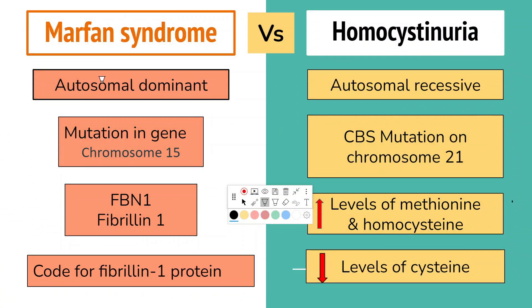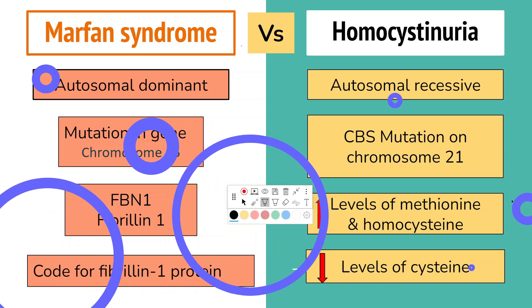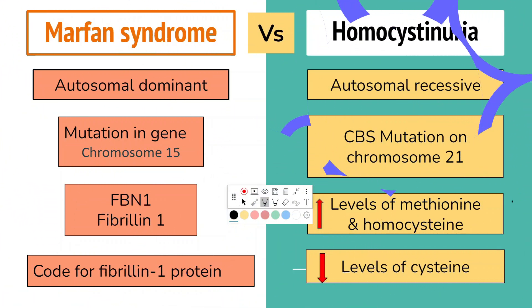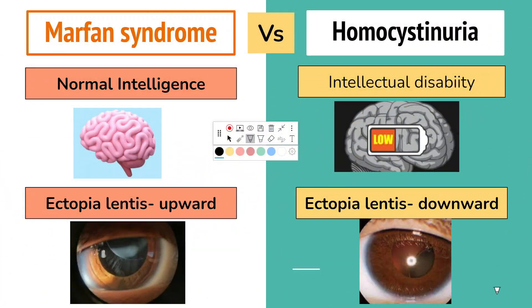Marfan syndrome is an autosomal dominant genetic condition which is caused by FBN1 gene mutation on chromosome 15, which codes for fibrillin-1 protein. While classical homocystinuria is an autosomal recessive disorder which is most commonly caused by CBS mutation on chromosome 21. This will have increased levels of methionine and homocysteine with reduced levels of cysteine.